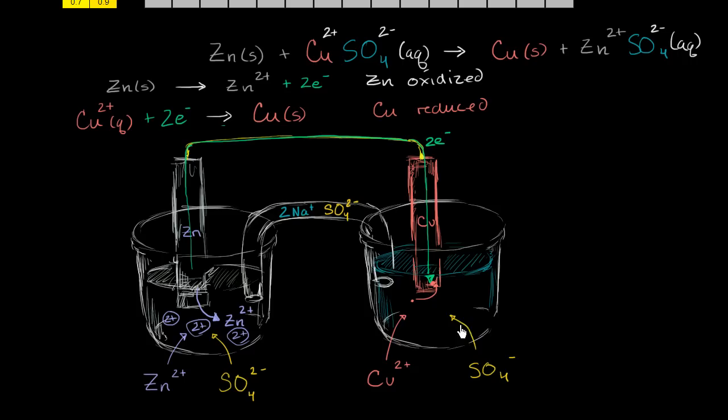And similarly, if all of the copper cations are capturing the electrons, this solution is going to become more and more negative. It's going to have more sulfate and less of the positively charged copper ions. So what can we do to make sure that that doesn't happen too quickly?